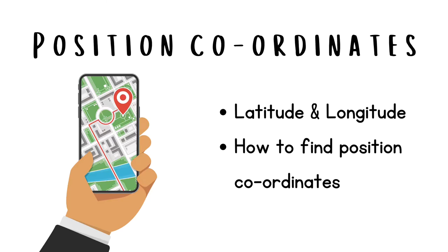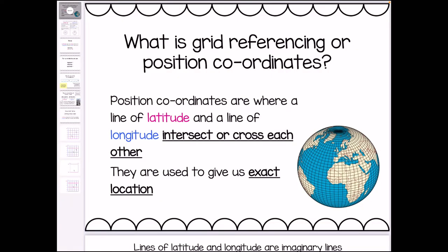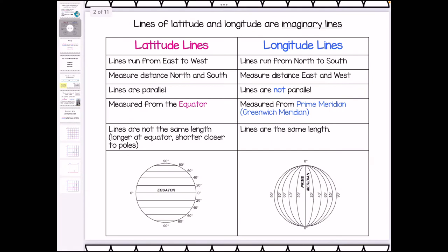Hey everyone, welcome back to Geography with Mrs Nguane. Today we're going to be looking at grid referencing or position coordinates. Both of those terms mean the same thing. Grid referencing or position coordinates are used to find exact location, and it's where a line of latitude and a line of longitude cross or intersect each other. In grade 8, in the first term, you studied the earth and learned a little bit more about latitude and longitude, so we're going to do a quick revision of that.